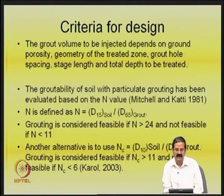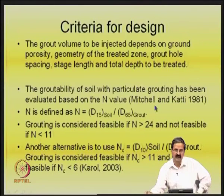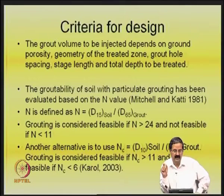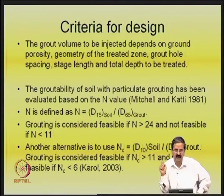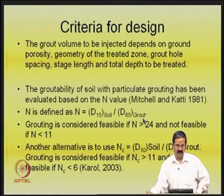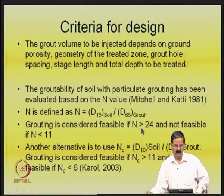There are guidelines for determining whether a particular area is groutable. They define an N factor: N = D15 of the soil divided by D65 of the grout. You compare the soil particle size with the grout particle size — the D65 of the grout must be much smaller than the D15 of the soil for the grout to penetrate. Grouting is considered feasible if N is greater than 24, and not feasible if N is less than 11. This criterion comes from Mitchell and Cutty's review of ground improvement techniques.